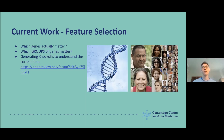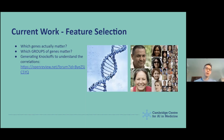Taking this further, gene one and gene two might not be very significant on their own, but when they act together, this leads to certain diseases. So we're looking at generating knockoffs to understand the correlations involved. The way you do this is you use unsupervised learning to create these very good fake signals, which you then compare to the real signals to determine which ones are actually causing certain diseases.